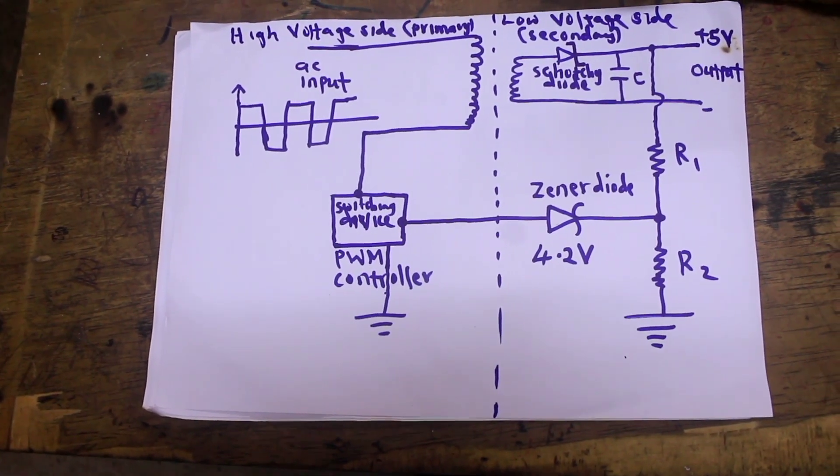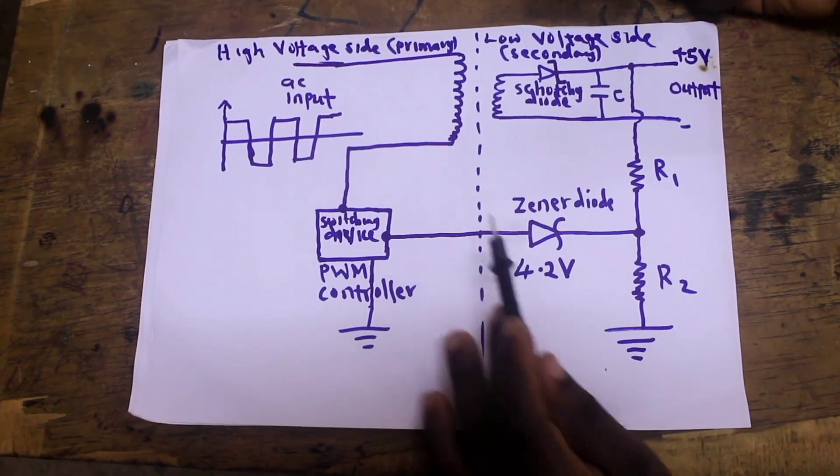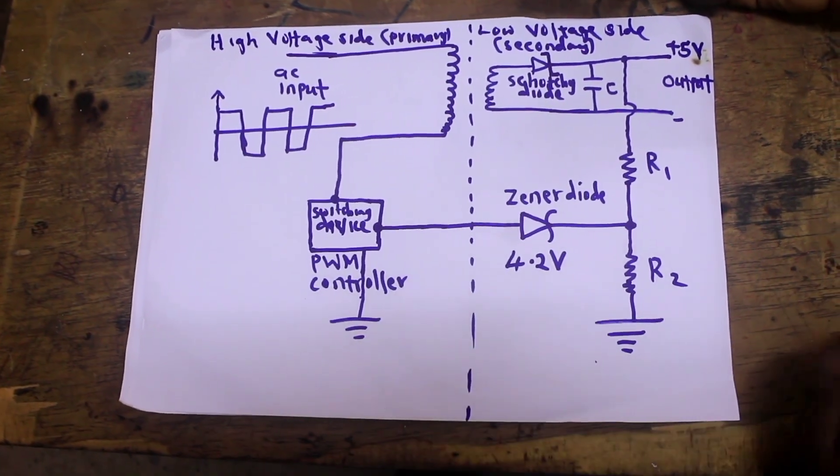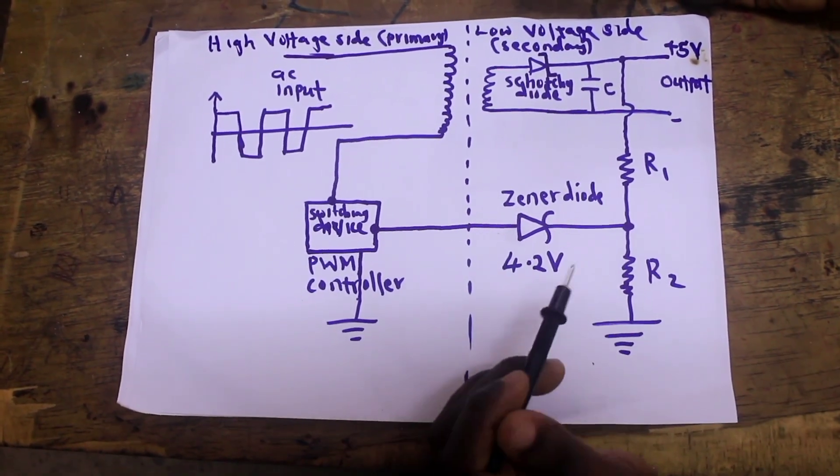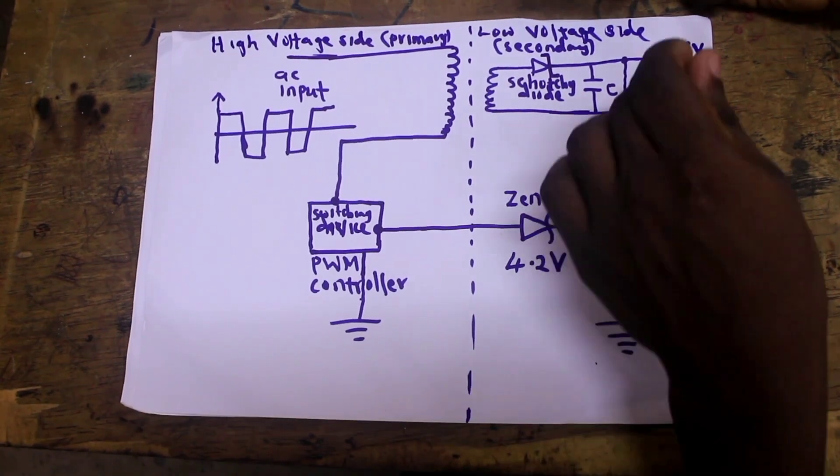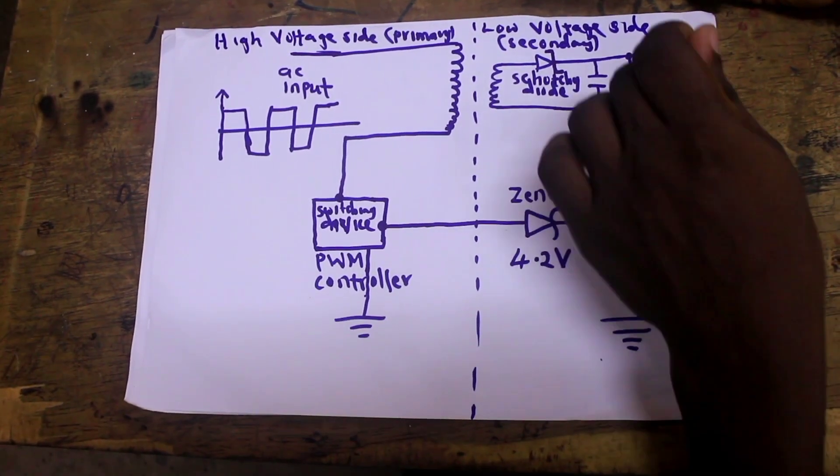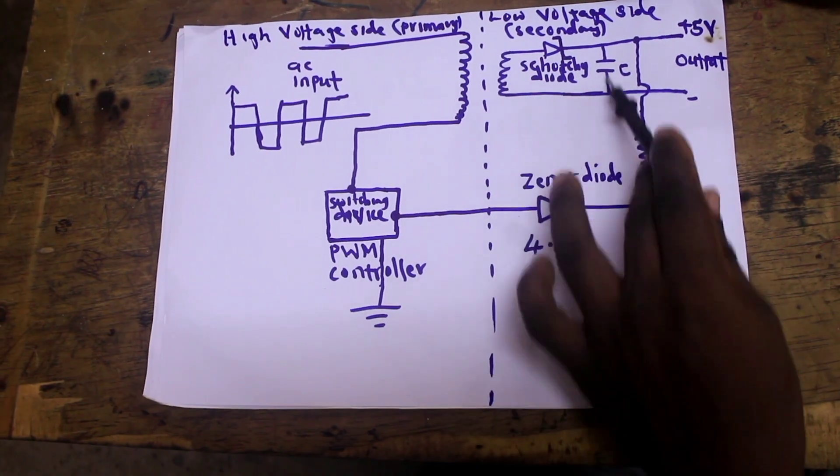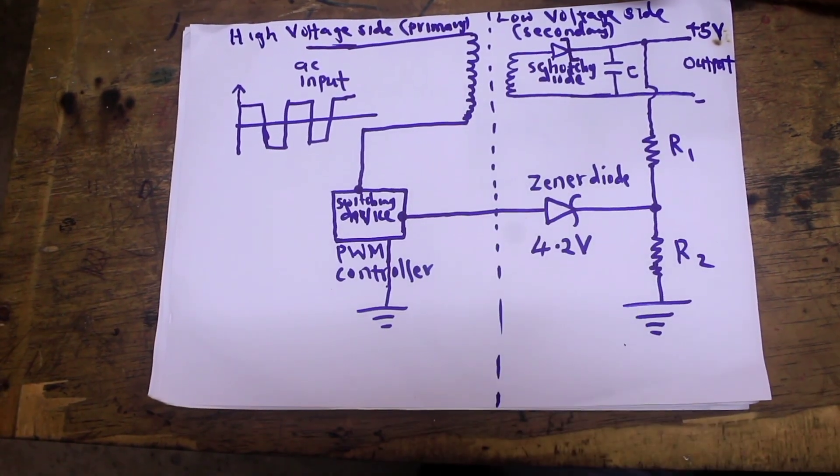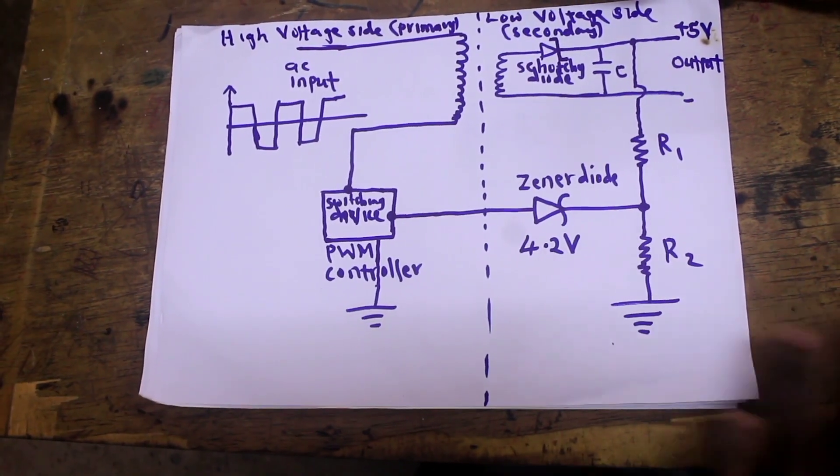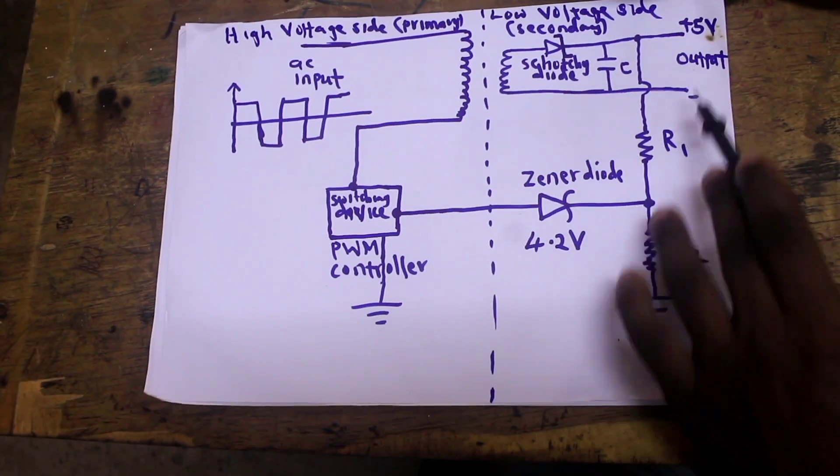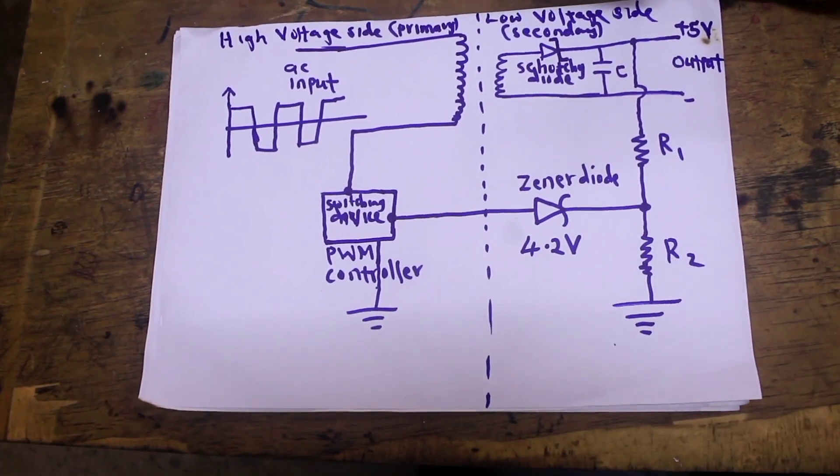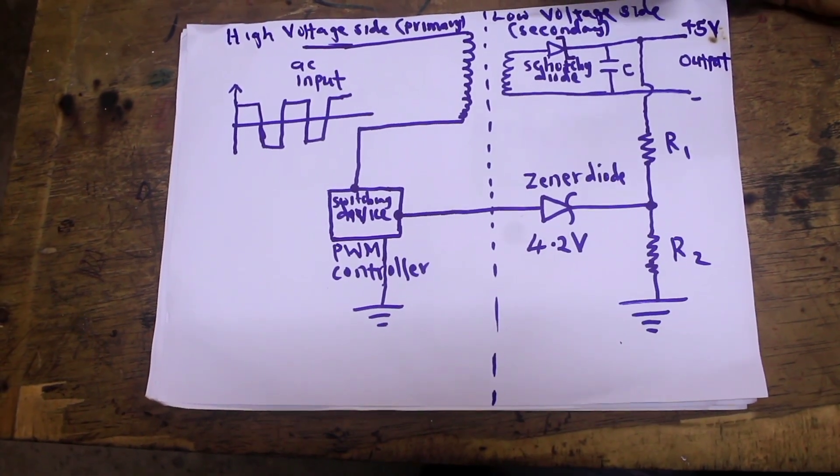So that is how it works. This happens like a thousand times in a second so that the output voltage remains 5 volts no matter what load you connect at the output. This is the feedback of the switched mode power supply which ensures that the output voltage remains 5 volts no matter the load connected at the output.